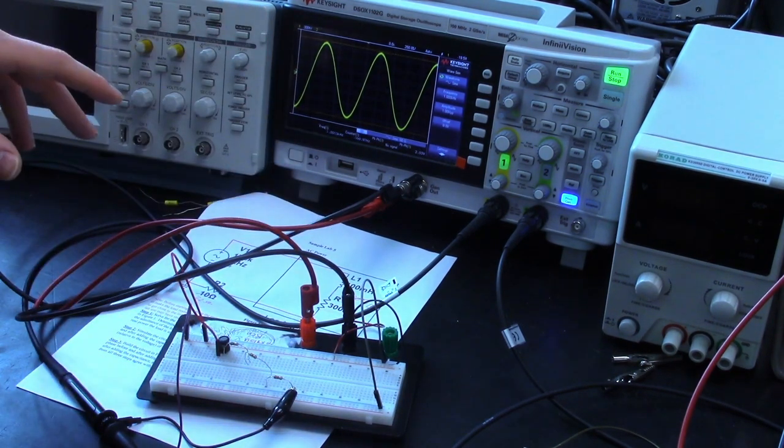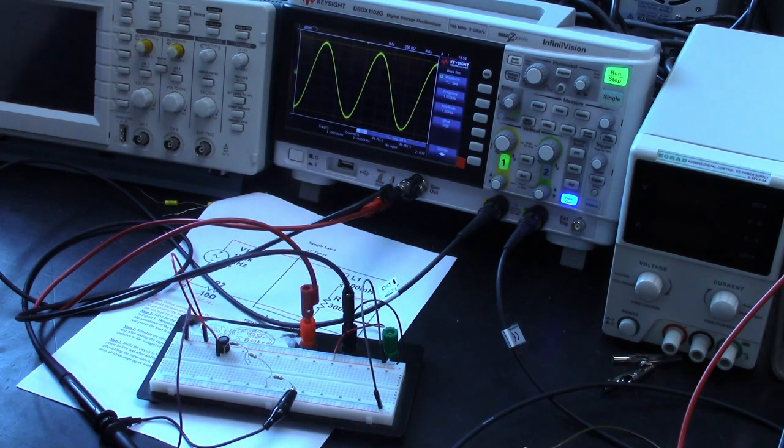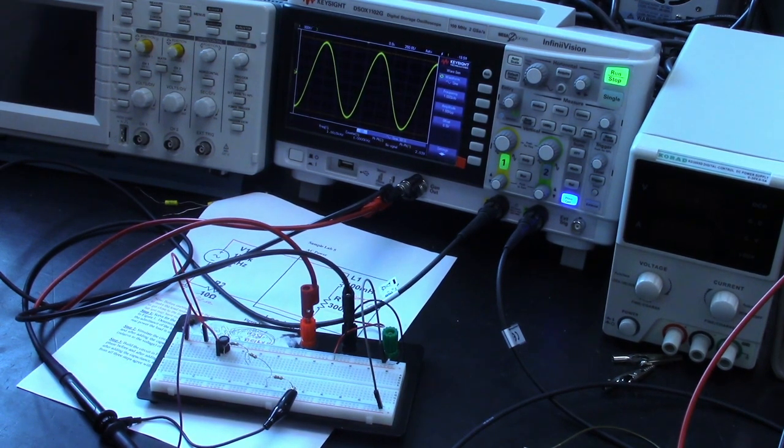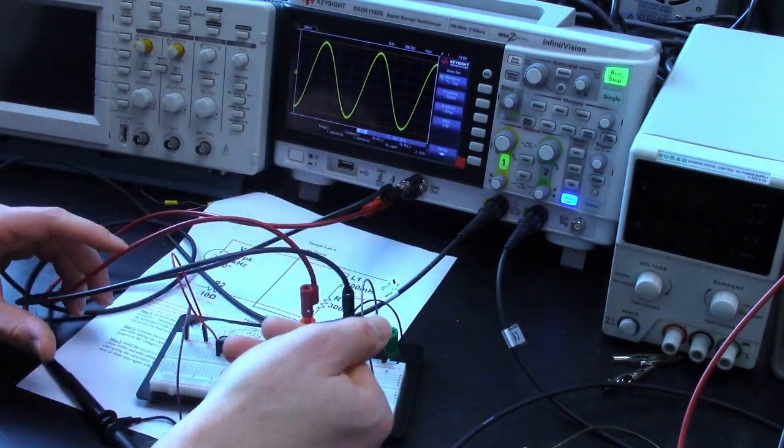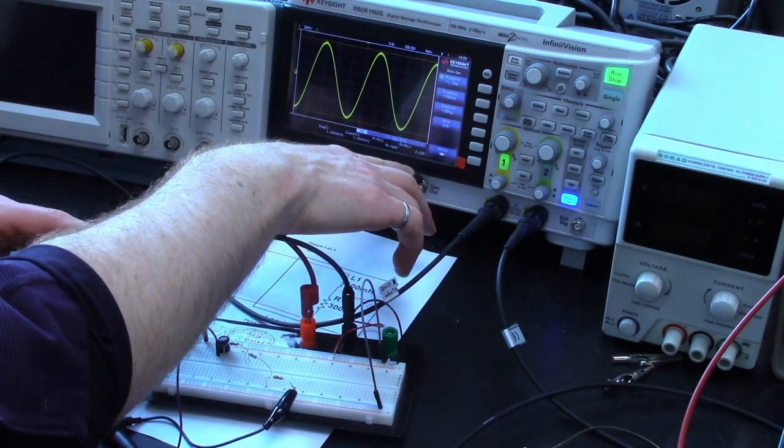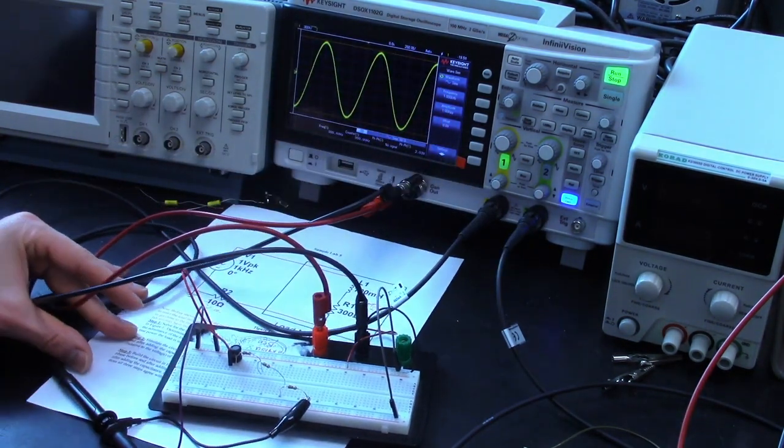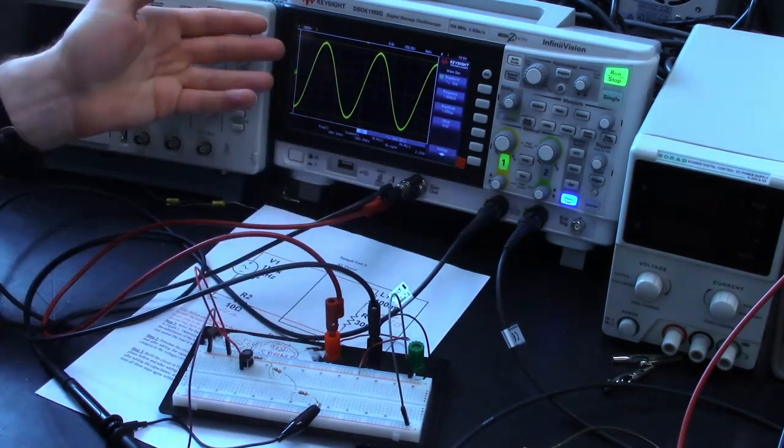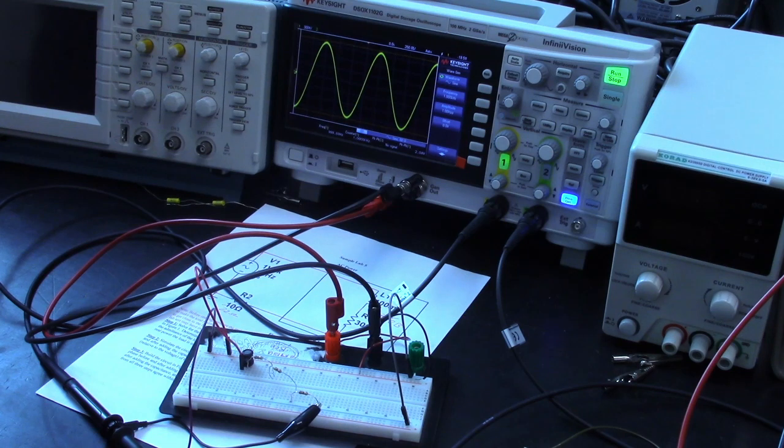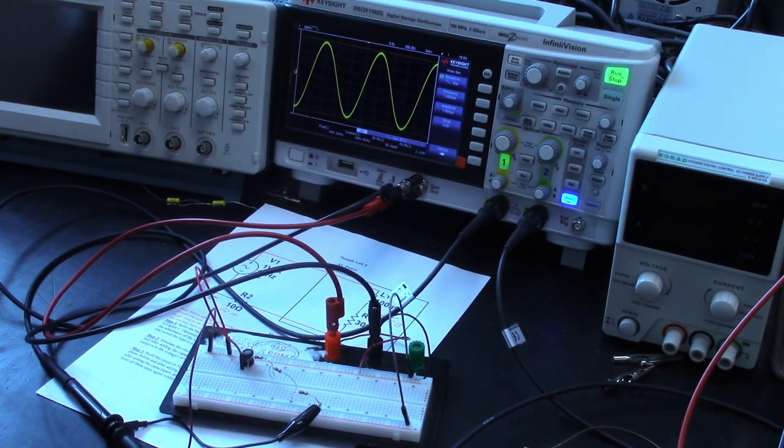So this is assuming impedance matching, but because we're not doing that we have to adjust this around so that we have the right amplitude. Now fortunately we wanted one volt peak not one volt peak to peak, so we're already set with this measurement as it is. All right, so now we can hook up the other terminal, the other probe of the scope.